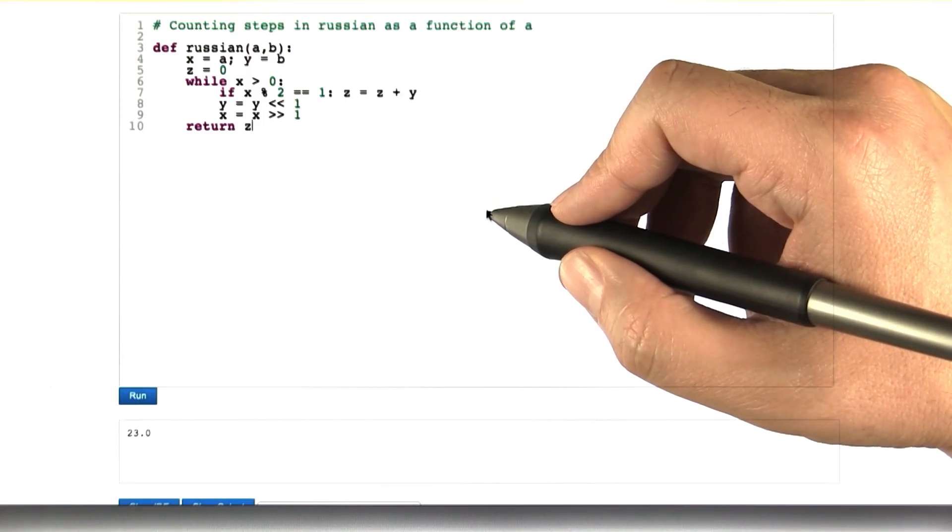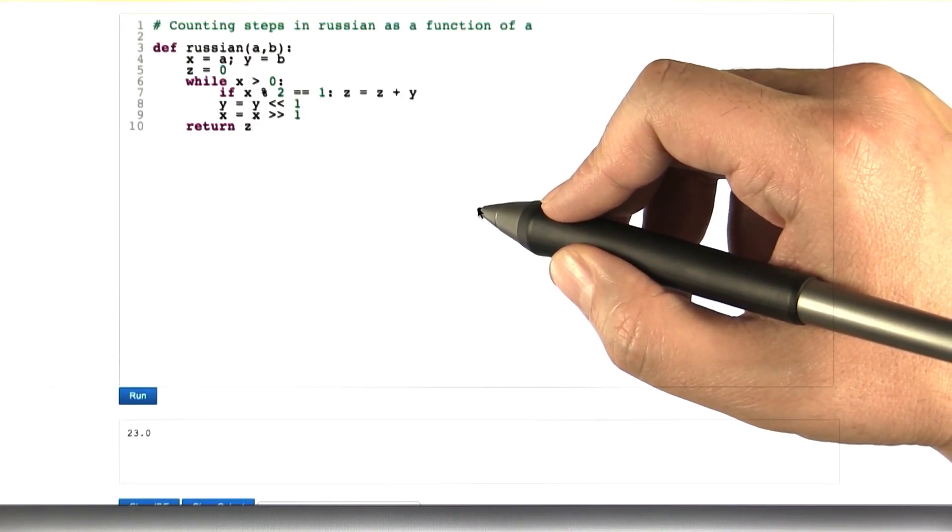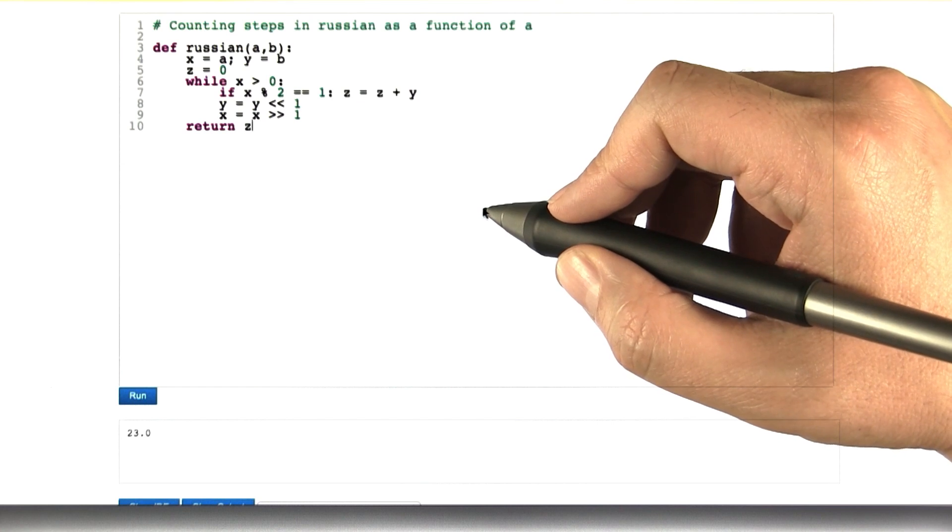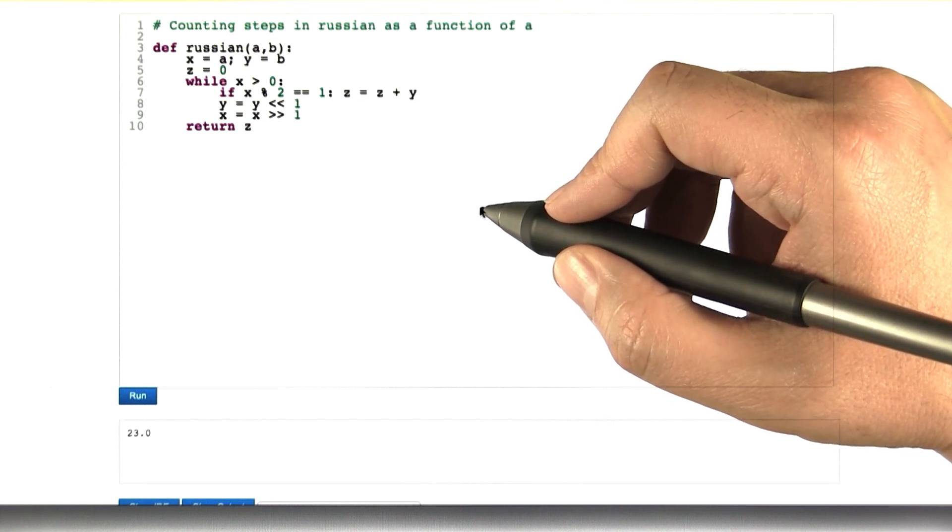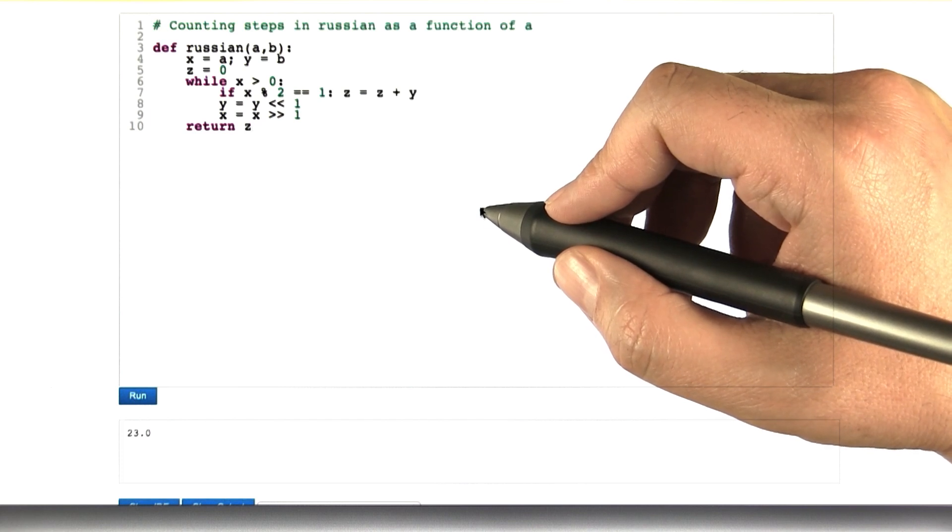The fact that the number of statements it takes to execute naive is a linear function of a shouldn't come as a surprise at this point. We actually plotted the running time and it really did give a very nice linear function.